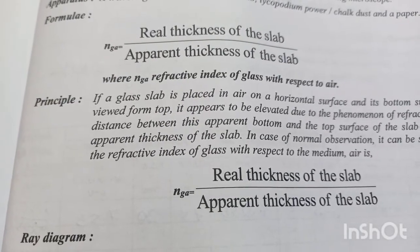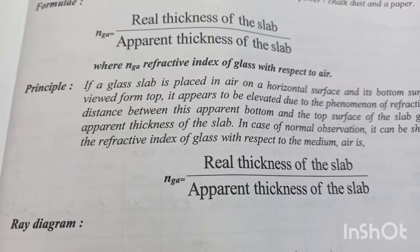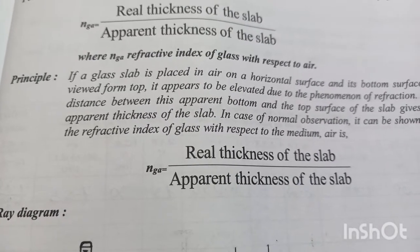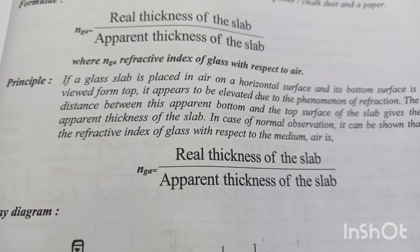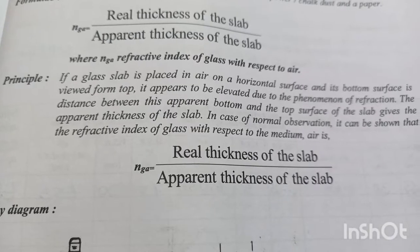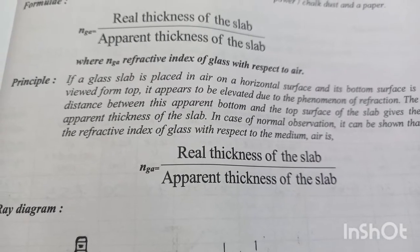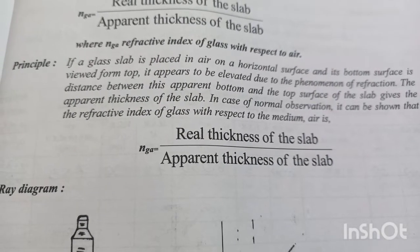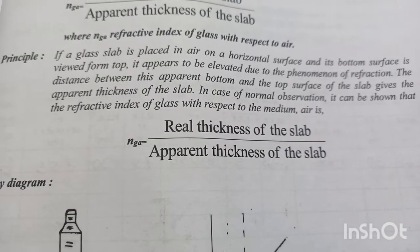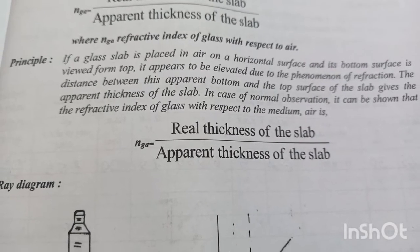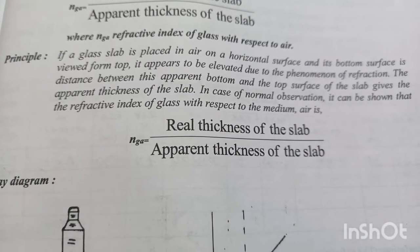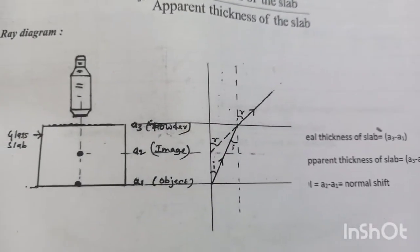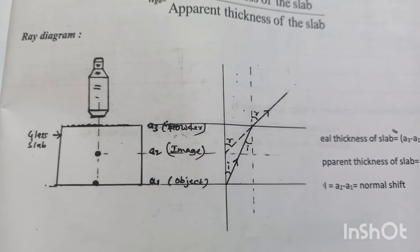Here, nga is the refractive index of glass with respect to air. The principle behind this experiment is: if a glass slab is placed in air on a horizontal surface and its bottom surface is viewed from the top, it appears to be elevated due to the phenomenon of refraction. The distance between the apparent bottom and the top surface gives the apparent thickness. Thus, nga equals real thickness divided by apparent thickness.